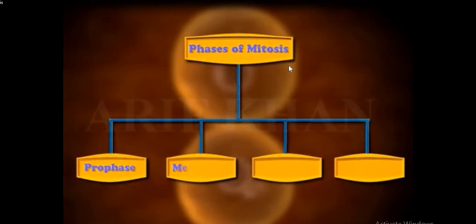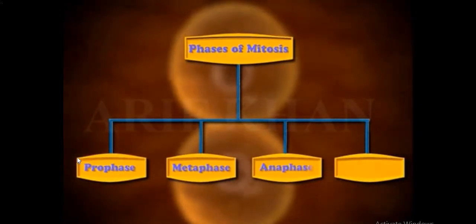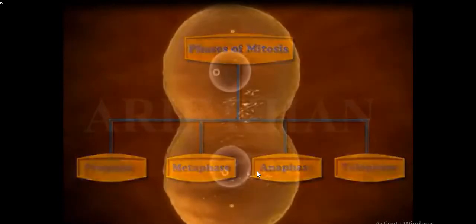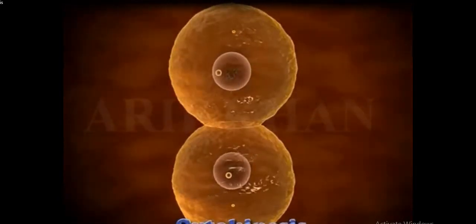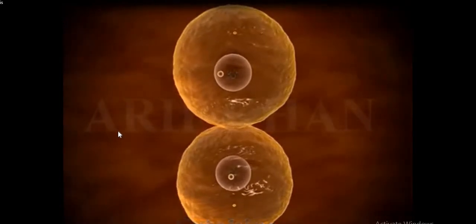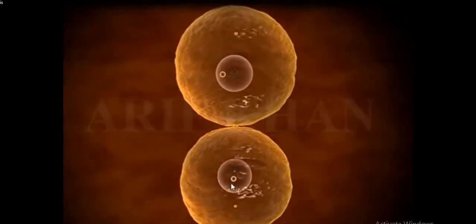Mitosis consists of four different phases. The first among them is prophase, then comes metaphase, then anaphase, and telophase. These are the four different phases that allow the cell to go from one to two different cells.